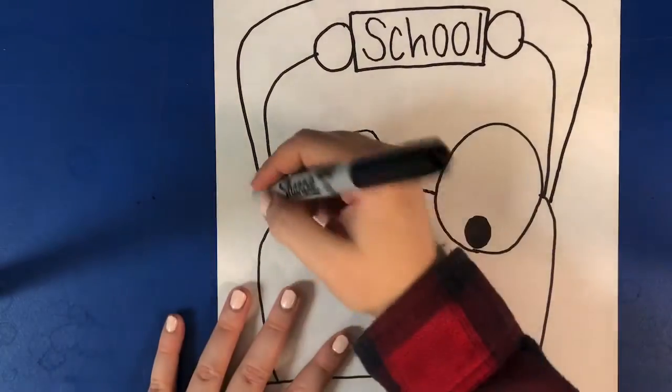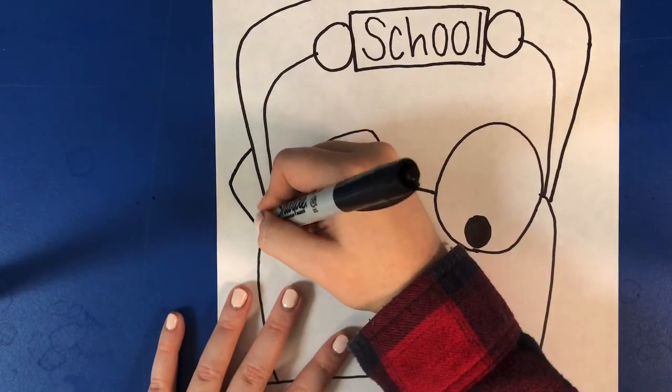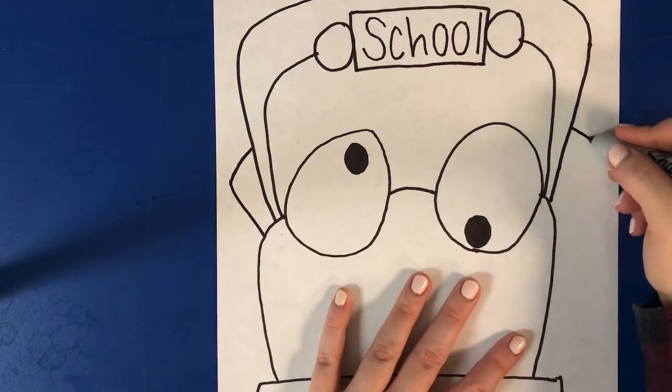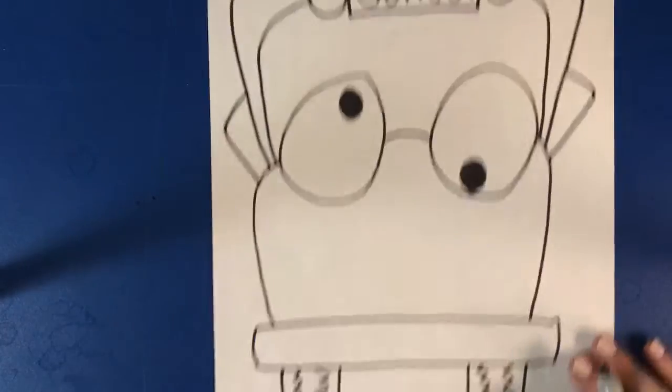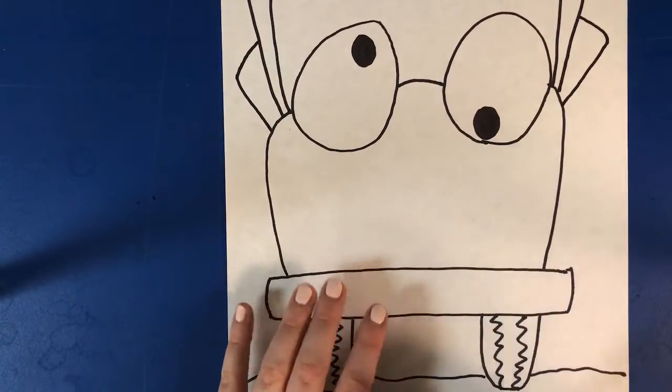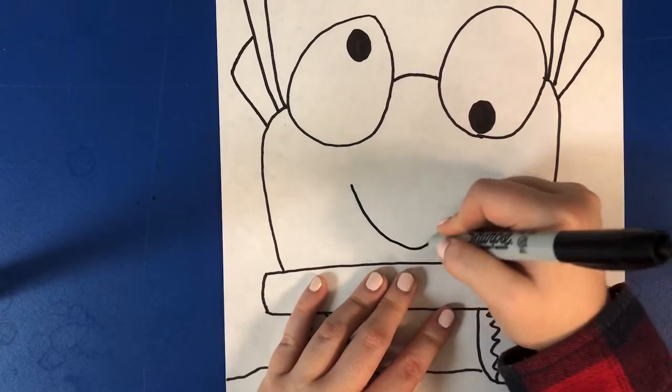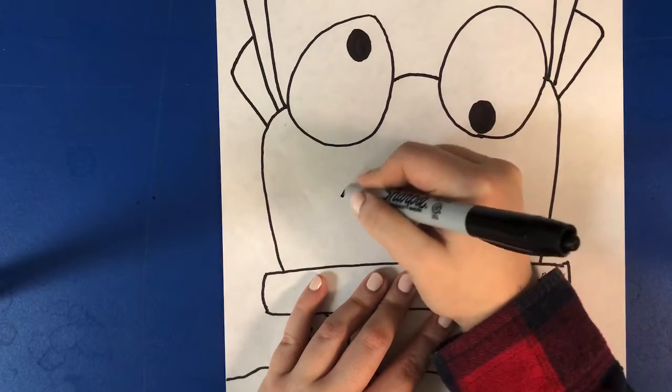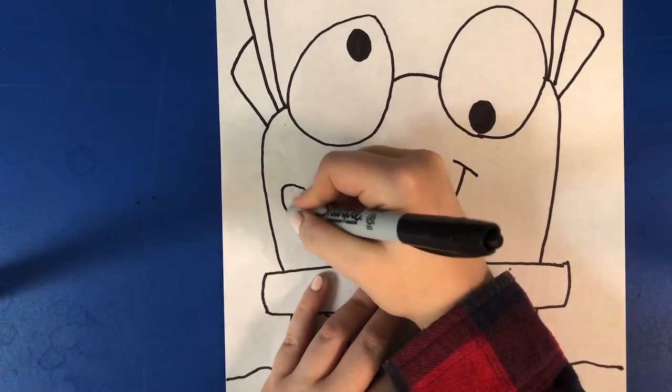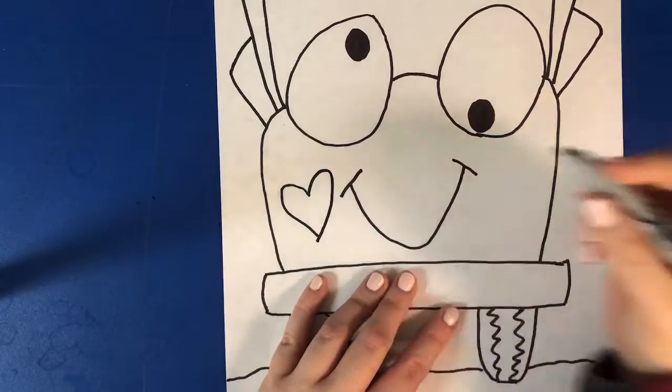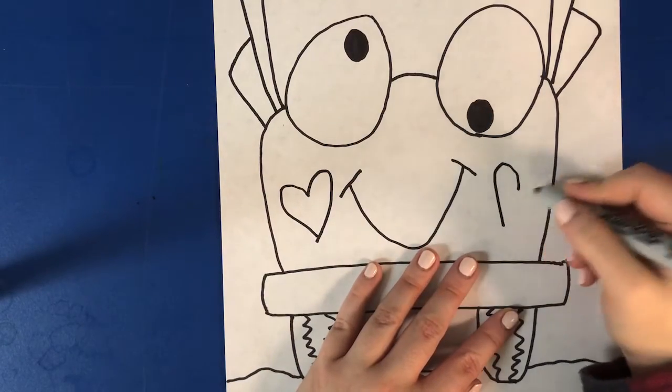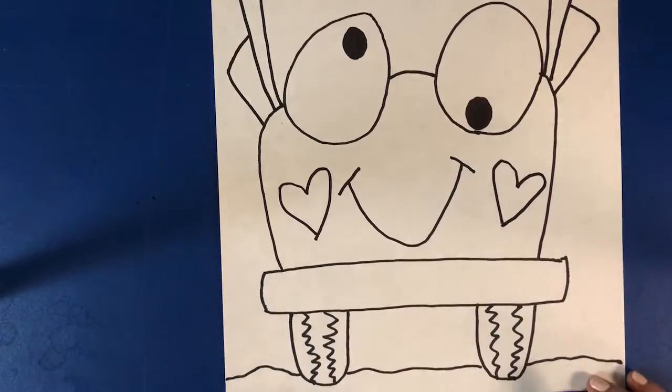And then our rearview mirrors are actually almost going to look like ears, so we're going to curve that down on either side. Now that we have that, we can put our smile right in the middle. And then I also gave my school bus two heart-shaped cheeks. So now you have a really silly, funny school bus drawing. Good job!